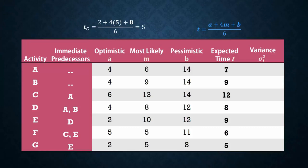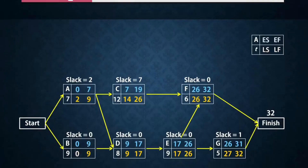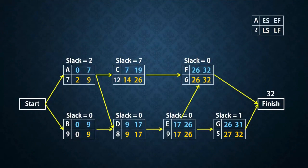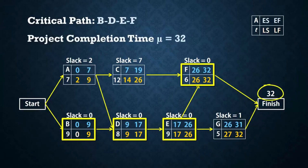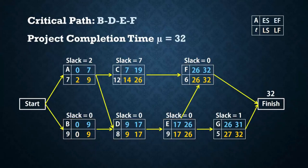Using these expected activity times and predecessors, I completed the project network from scratch in an earlier video. You will find the link provided in the description. The critical path is B, D, E, F and the project completion time is 32 weeks. Note that the project completion time can also be found by adding up the activity times for critical activities.